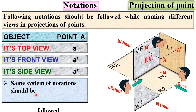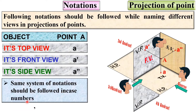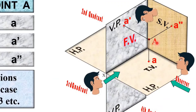The same system of notation should be followed in the case of numbers like 0, 1, 2, 3, 4, 5, 6, etc. So if it is point 6, the top view will be '6', the front view will be '6-dash', and the side view will be '6 double-dash'.